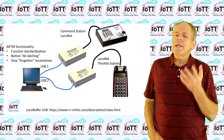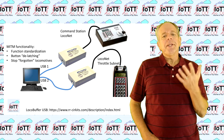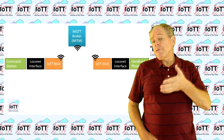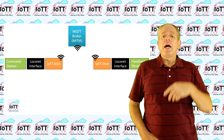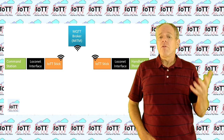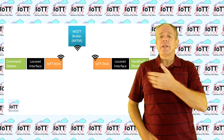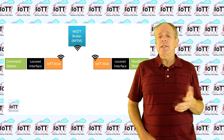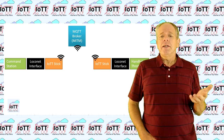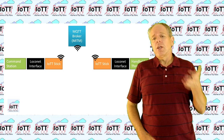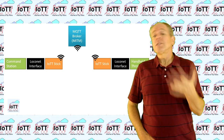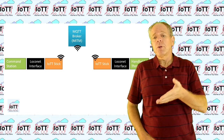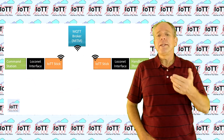In my case, however, I am feeding the LocoNet messages over Wi-Fi to an MQTT broker and from there over Wi-Fi back into the other network. This may add a few milliseconds of latency when using a local broker and a few dozens of milliseconds in case I am using a public broker over the internet.